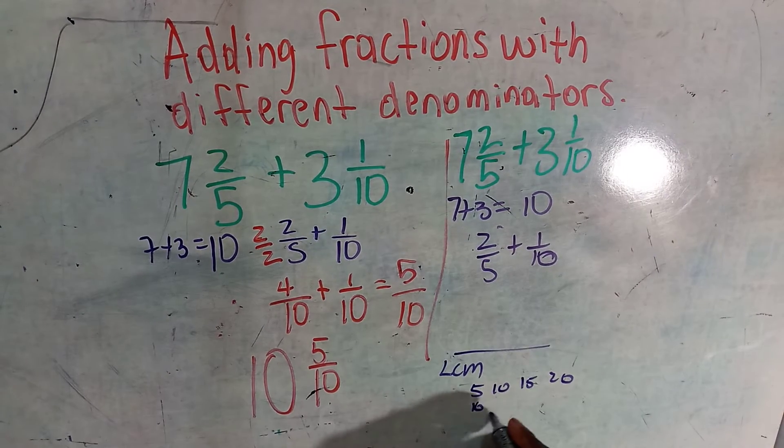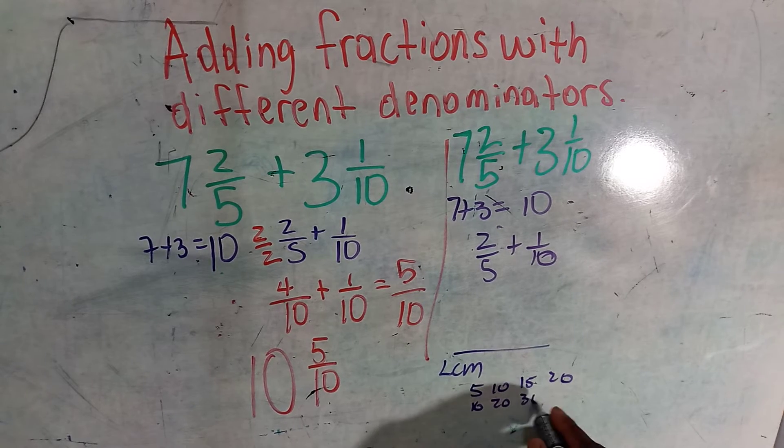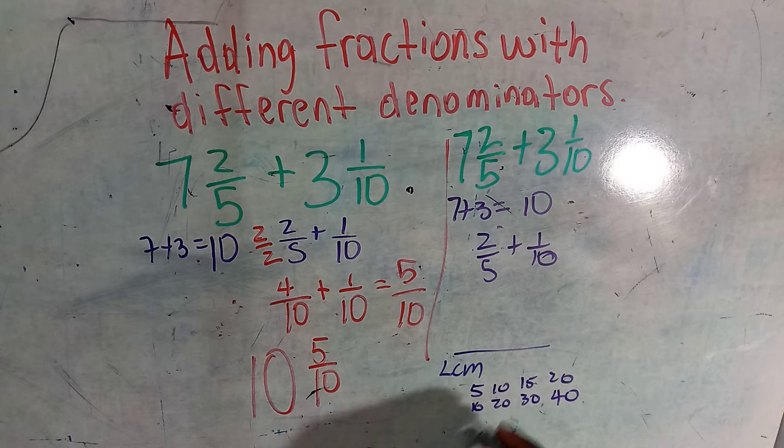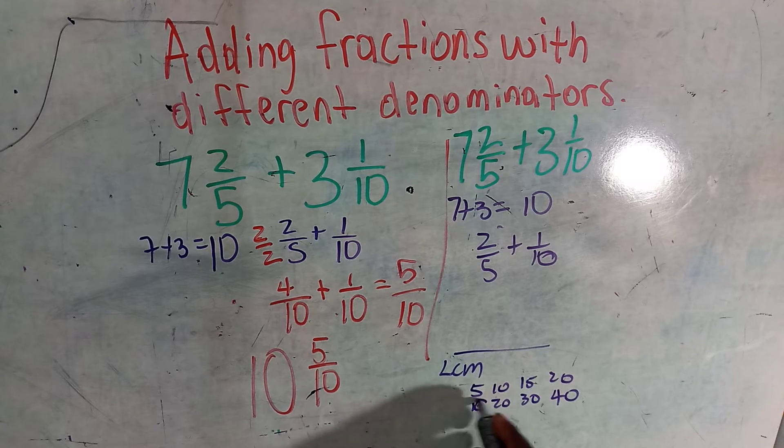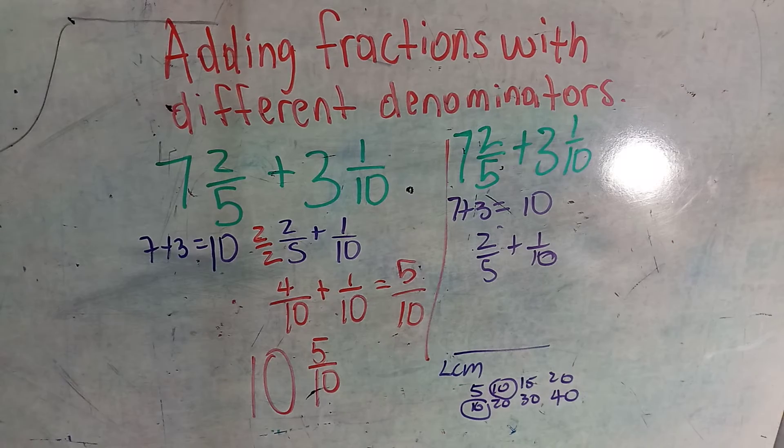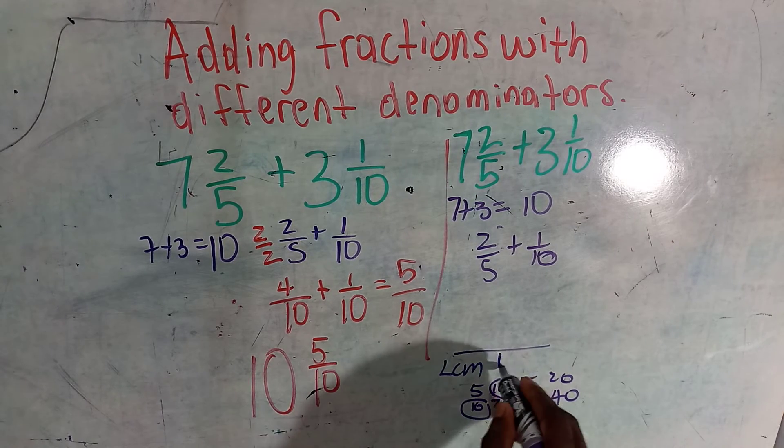Ten times one is ten, ten times two is twenty, ten times three is thirty, ten times four is forty. What is similar in both these multiples? Ten here and ten here. So we find that ten is the lowest common multiple in both. Ten is a number which both denominators can go into without leaving a remainder.